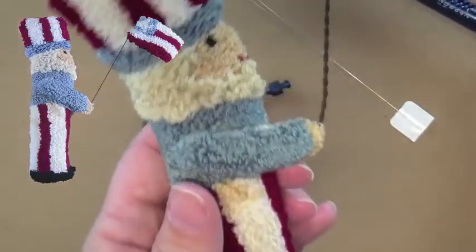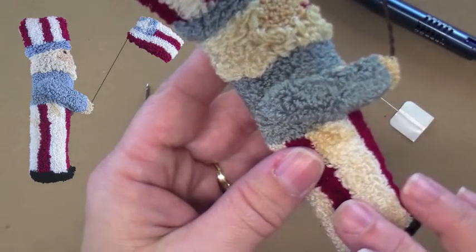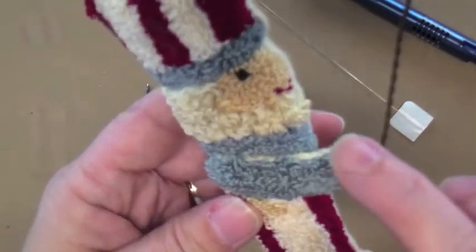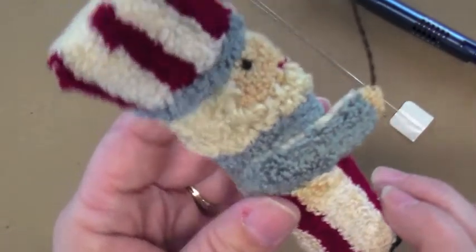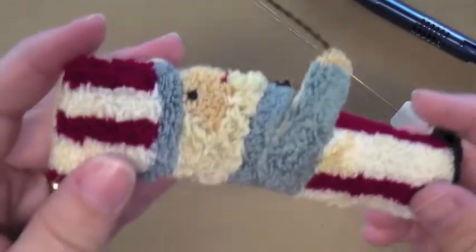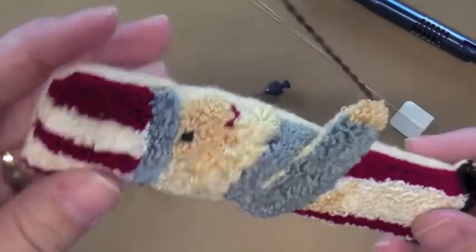I'll show you here, this Uncle Sam, I punched him with 3, the setting number 3, except for his beard and his hair, which I did with a punch setting of 7. So you can see how it gives it a fluffier look there on his beard and his hair.